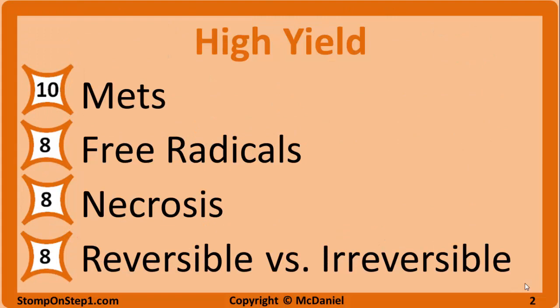Another high yield topic is differentiating between reversible and irreversible cellular injury. You're usually going to have to differentiate between the two based on what's going on at the cellular level. Reversible injury can have things like cellular swelling, increased sodium in the cell, and decreased ATP, while irreversible injury would have more things like increased calcium and activation of caspases.